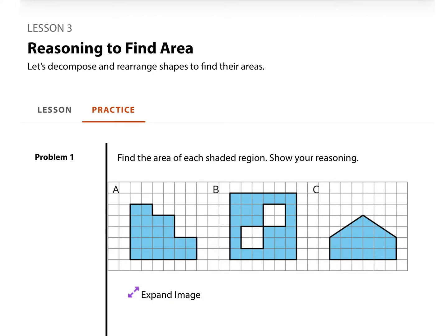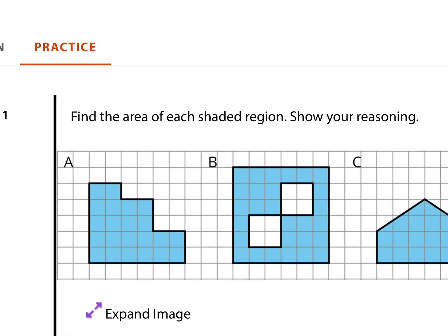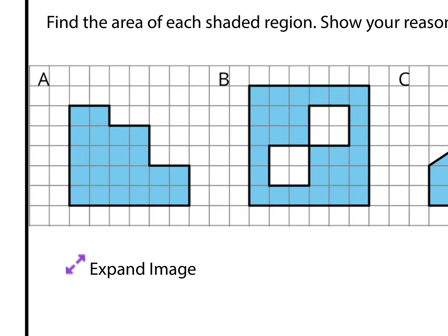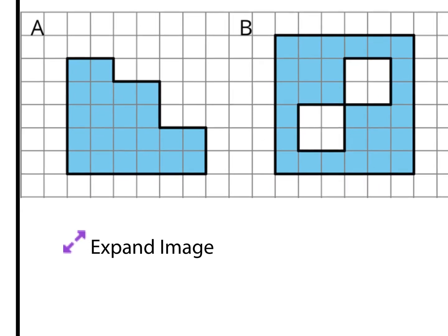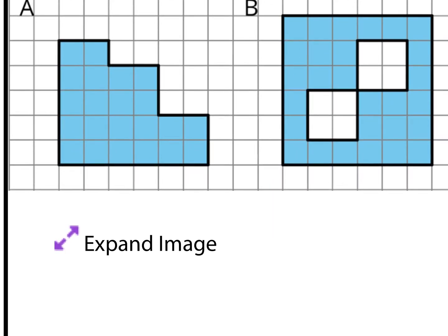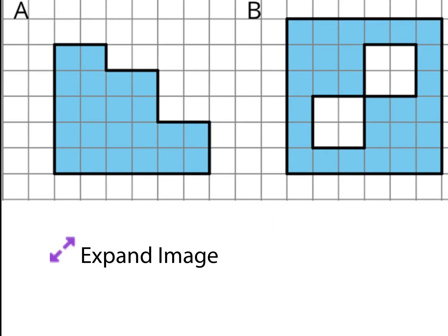As we look at question 1, find the area of each shaded region and show your reasoning. For letter A, there are a couple of different options to decompose and break down this shape. I have rectangles on my mind because I'm going to divide this into rectangles.